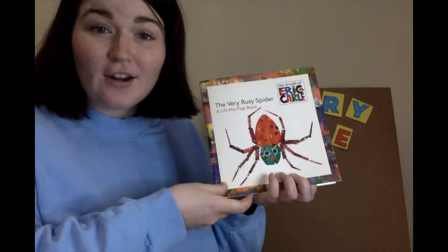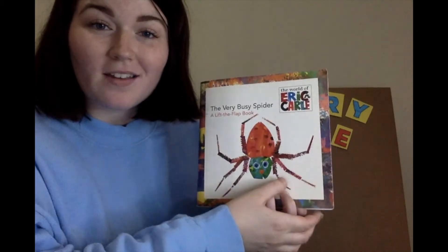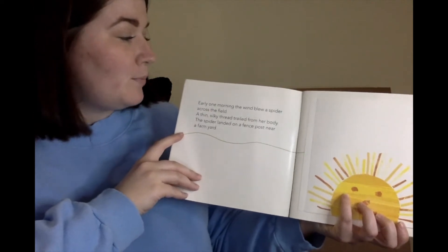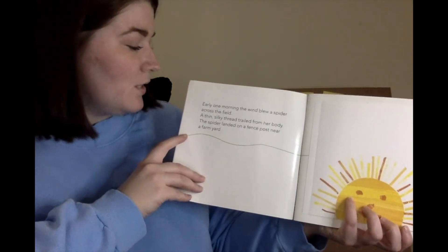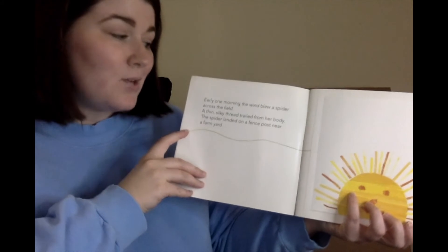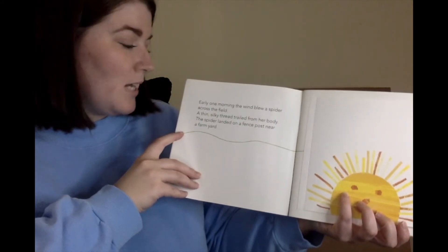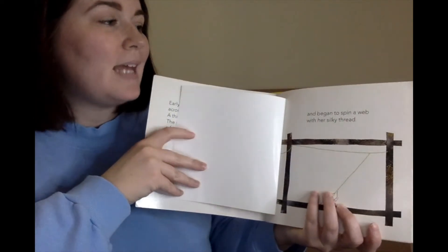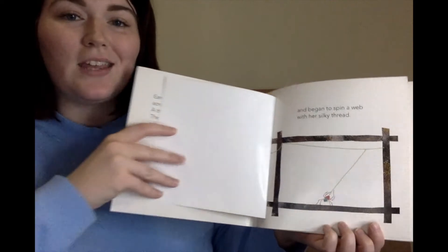The Very Busy Spider by Eric Carle. Early one morning, the wind blew a spider across the field. A thin, silky thread trailed from her body. The spider landed on a fence post near a farmyard and began to spin a web with her silky thread.